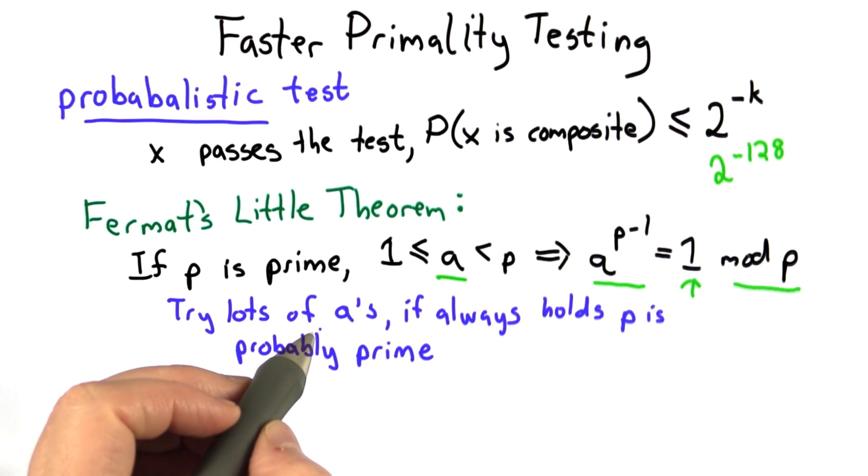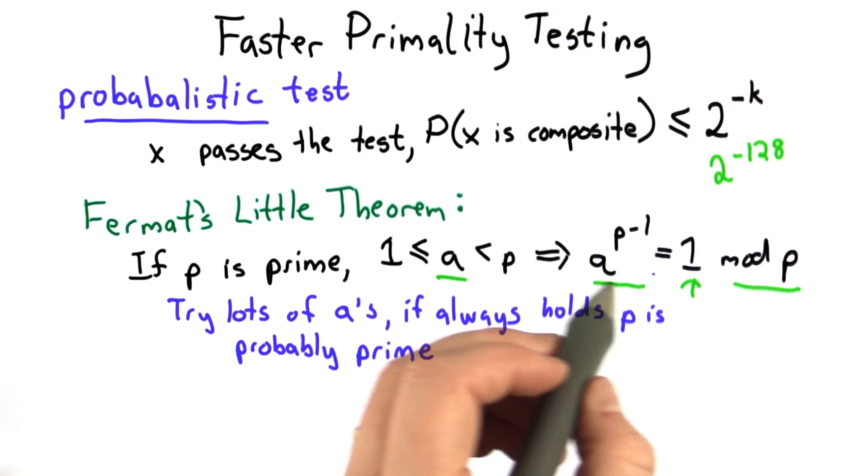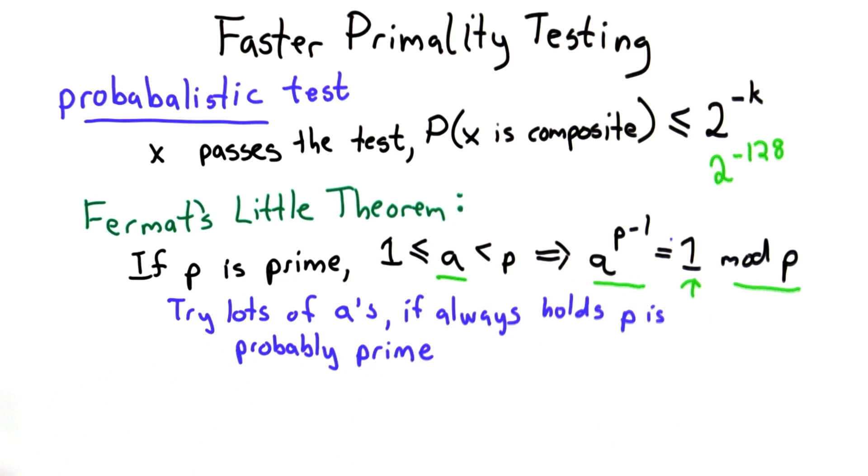So maybe we could try lots of a's, and if this equation always holds that a to the p minus 1 is congruent to 1 mod p, well that would mean that p is probably prime.